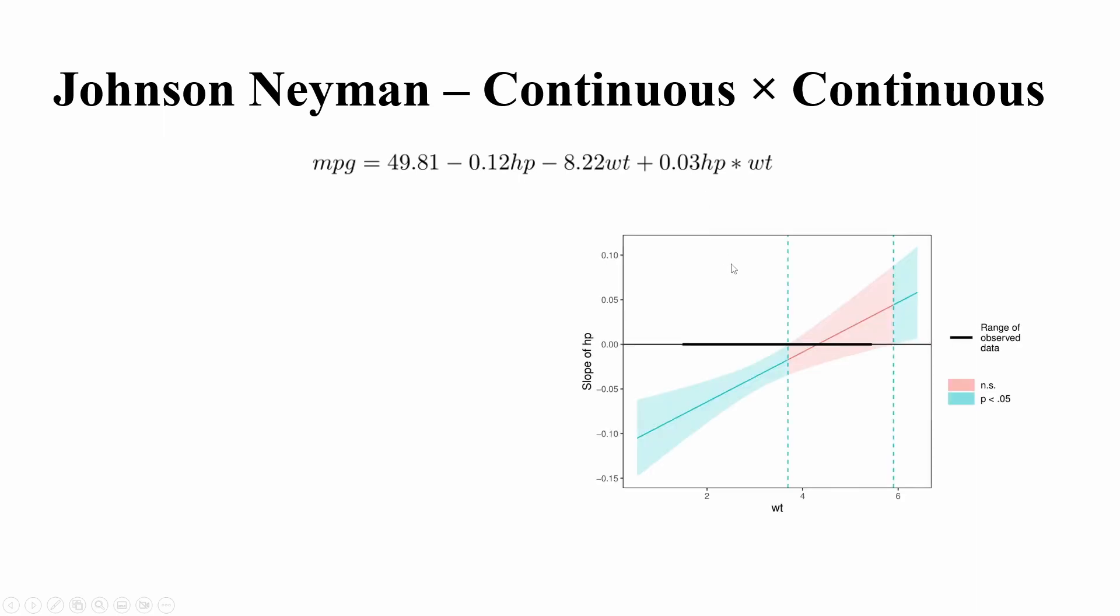So in the R Johnson-Neyman plot video I show you that this is the way to plot. So here the y-axis again is the slope of the horsepower. So basically it's the partial derivative of mpg with respect to horsepower. So this solid line basically is to plot the intercept and the slope of this simple linear regression. This simple linear regression is from this interaction, but you calculate the partial derivative and this becomes the new y.